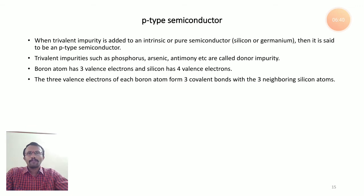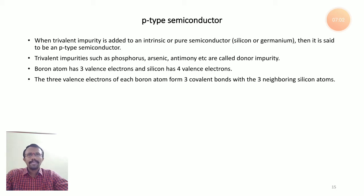Now we will see p-type semiconductors in detail. When the added impurity is trivalent, the semiconductor is called a p-type semiconductor. The trivalent impurity has a vacant space which is ready to be occupied by an electron — that's why it is called acceptor impurity. There is a correction: it is not donor impurity, it is acceptor impurity.